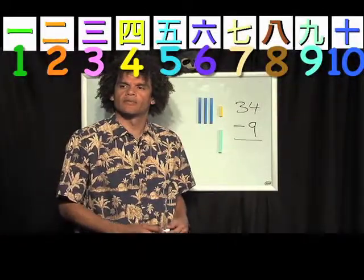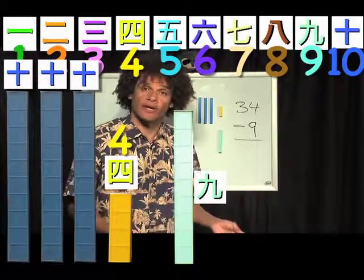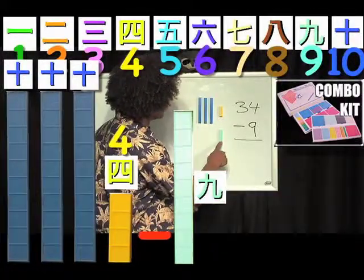All right. And the last one we're going to do here is 34 take away 9. Again, do we have enough? We don't have enough. So again, where am I going to take that 9 away from? We're going to take away from one of these 10s here. So again, don't have enough.